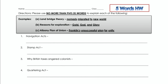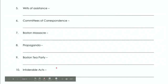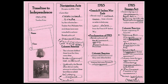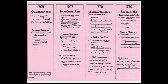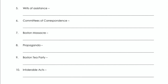So you're going to explain the Navigation Acts, the Stamp Act, why British taxes angered the colonists, the Quartering Act, the Writs of Assistance, Committees of Correspondence, Boston Massacre, Propaganda, Boston Tea Party, and Intolerable Acts. Where are you going to get the information? Well, from these notes, of course, which you have — or if you needed the filled-in ones, you could pause here and look at this. You might need to zoom in a little bit, but you have touch screens so zooming in should not be that hard. You're going to write five words or less about each of these things.